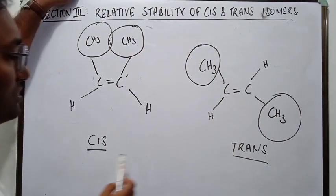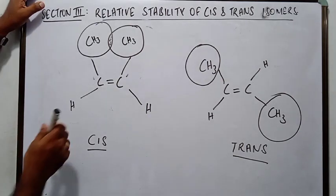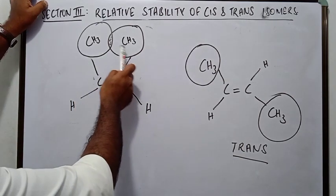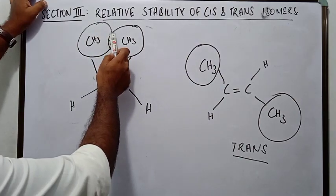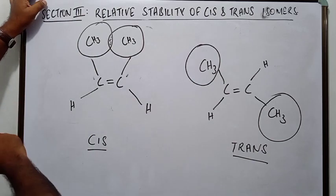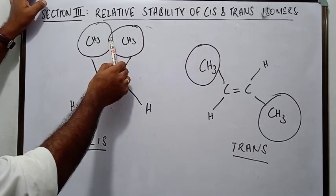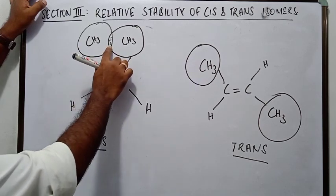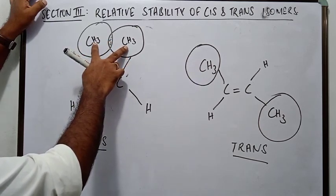The trans isomer is more stable than the cis isomer. Why? Let us look at the cis isomer. Here you can see two bulky groups. There is an overlap of electron cloud of the two bulky groups. This overlap creates repulsion between the electrons of the two bulky groups.